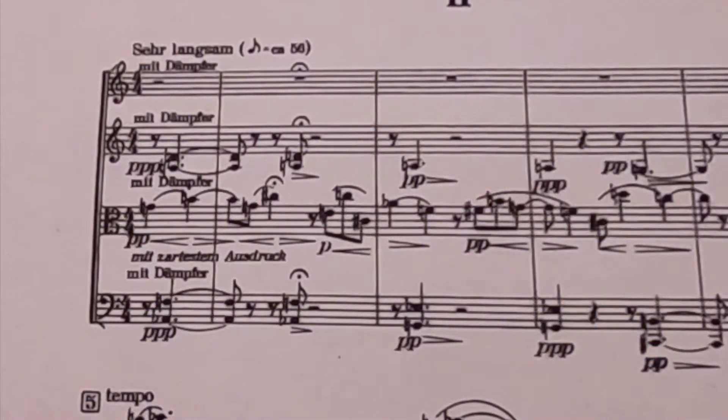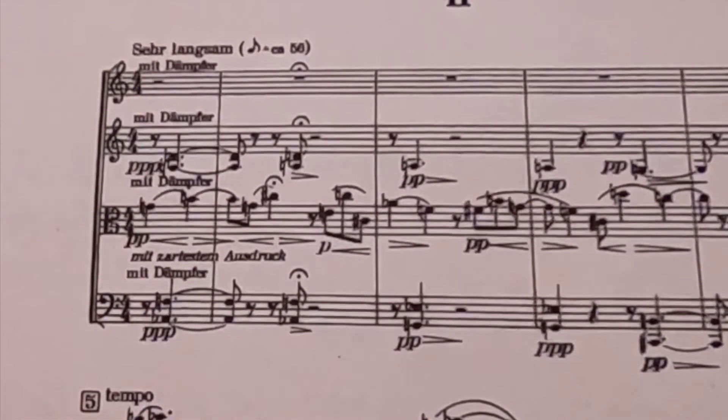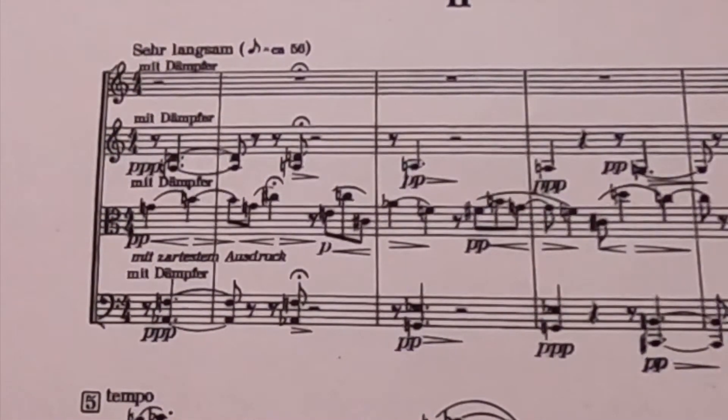Before we begin, everyone should take a listen to this movement. You'll notice that all of the string parts have mutes on, mit dempfer. The piece is very slow. It says zer langzom, eighth note equals 56, so it starts off quite slow. But today what we're going to be looking at is some of the set theory aspects.